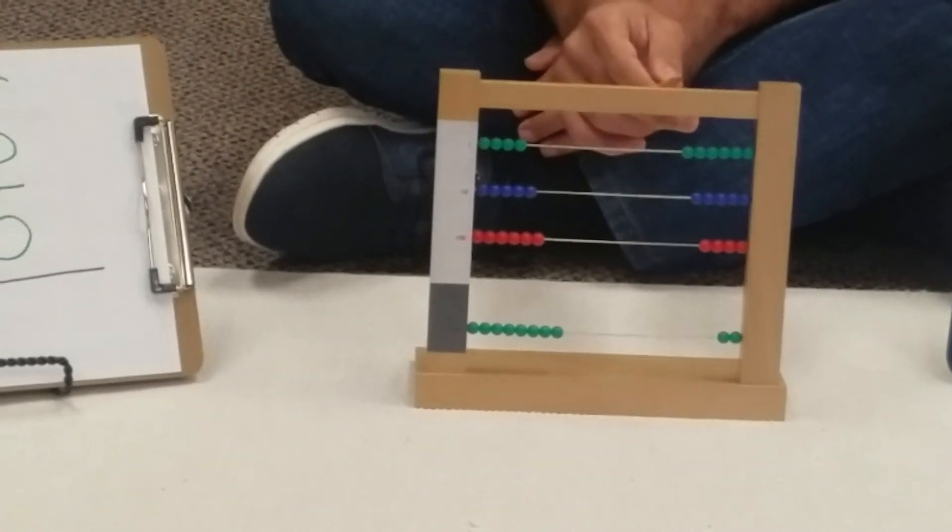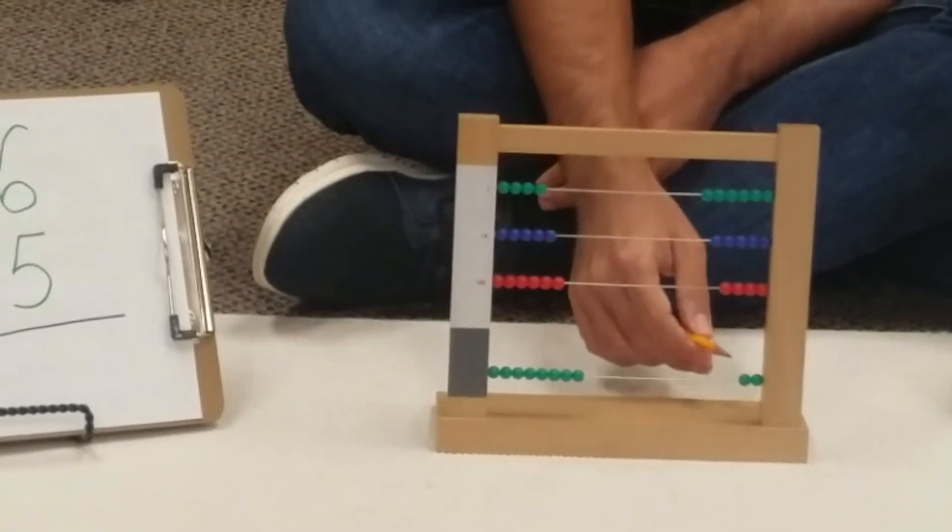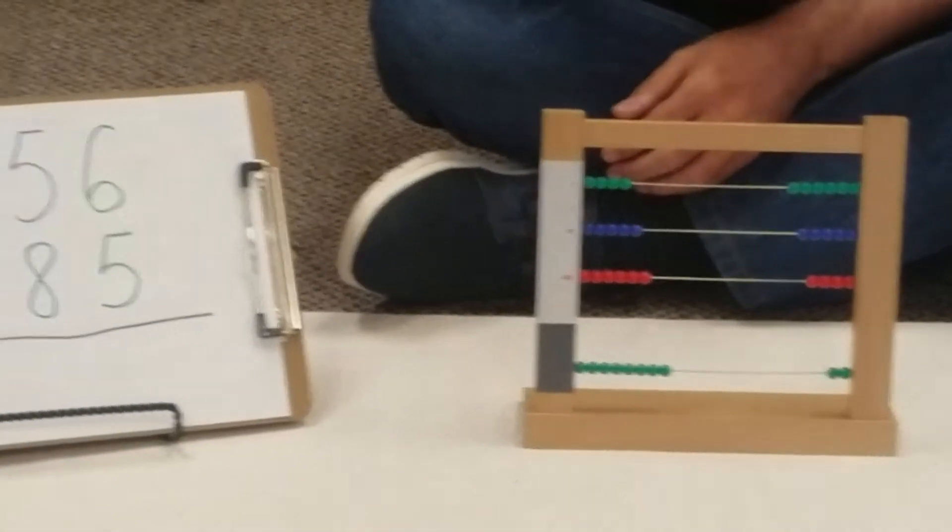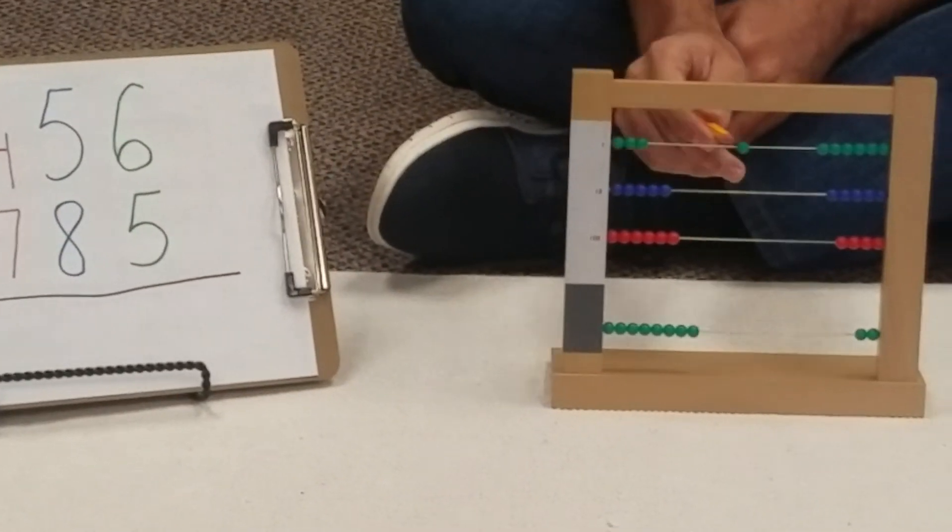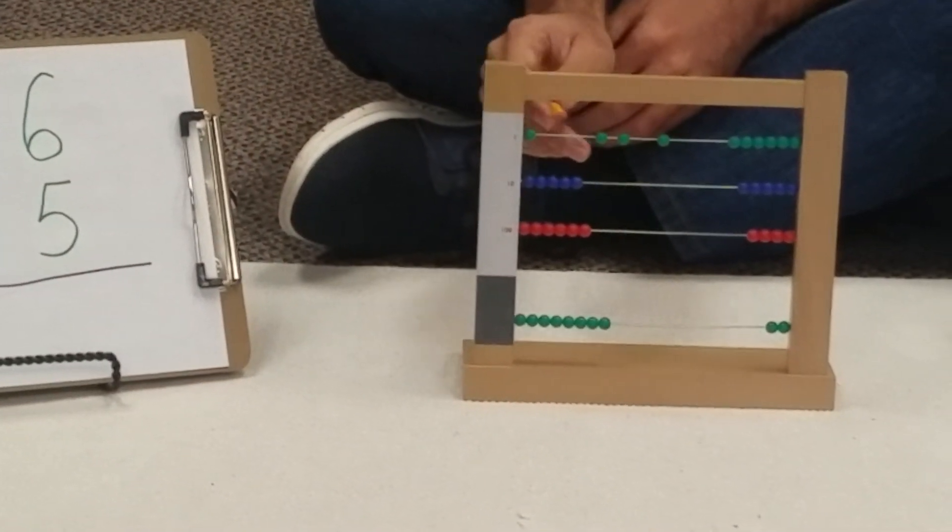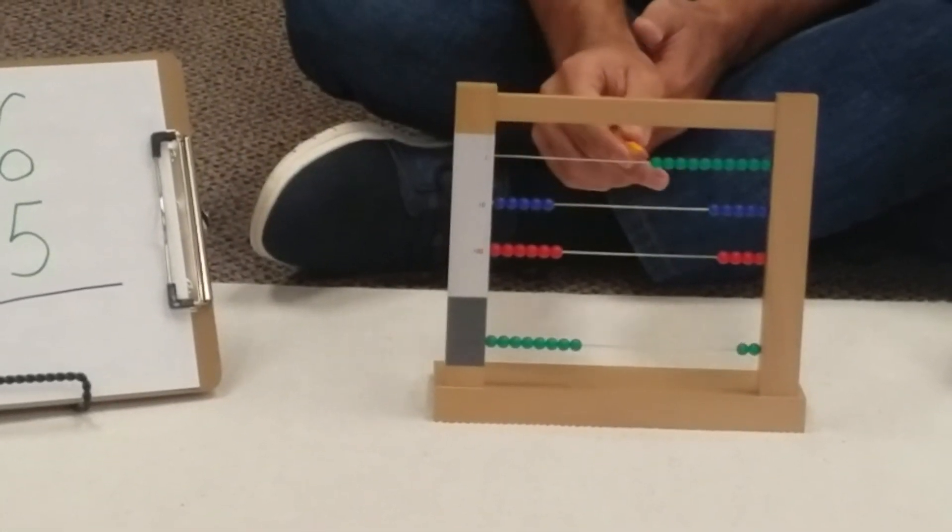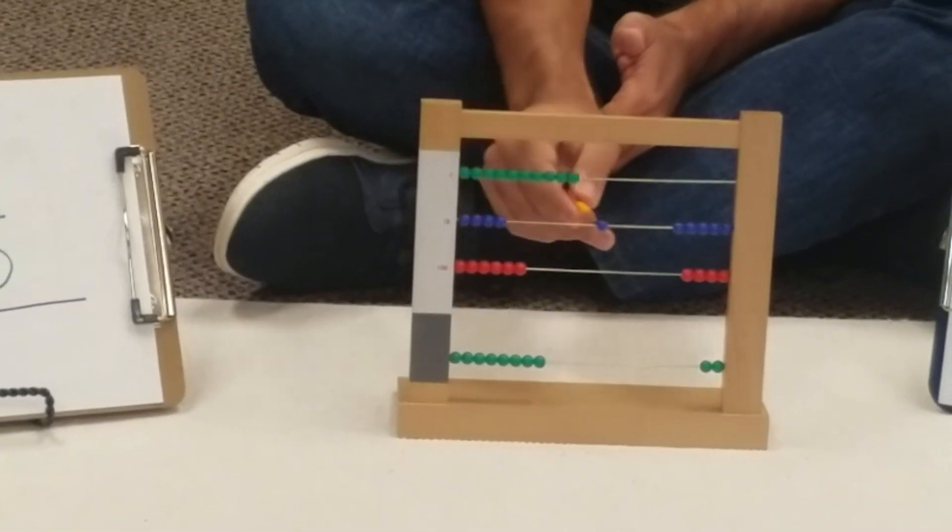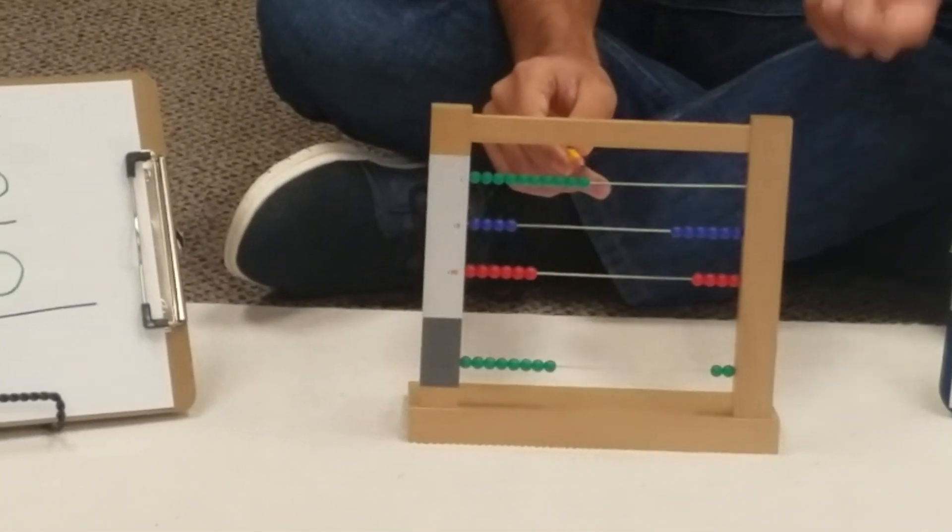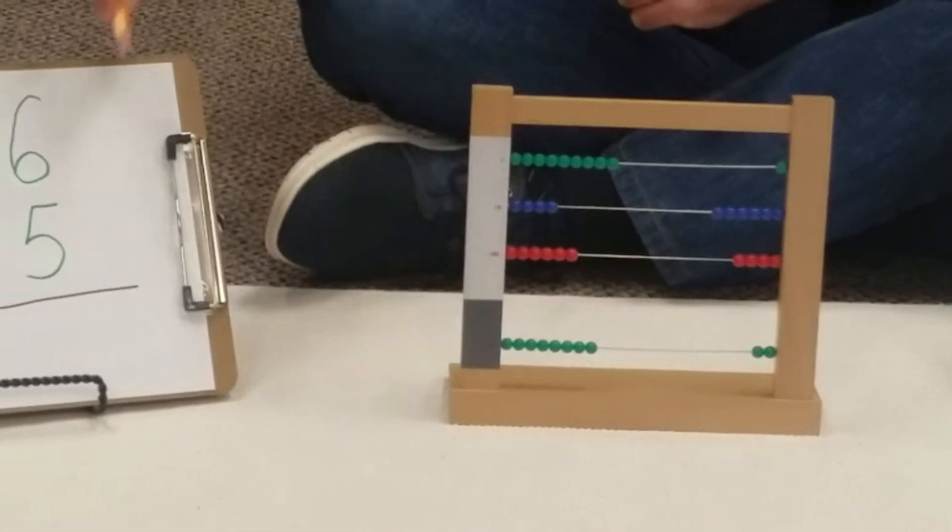You may see some students want to read the number from top to bottom, and that's another thing that can make it difficult. Now we're going to add 5 units. So we do one, two, three, four, and we don't have more, so we have to do an exchange. I have 10 units, so I'm going to exchange for one ten. Remember we only added four, and this is the fifth one. So we added the units.